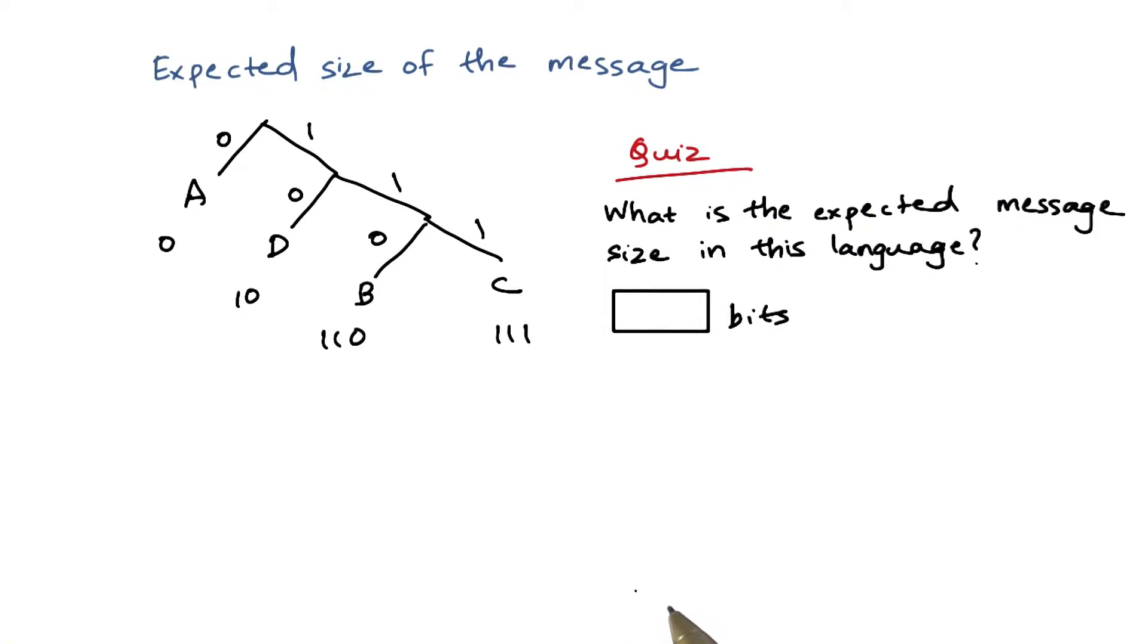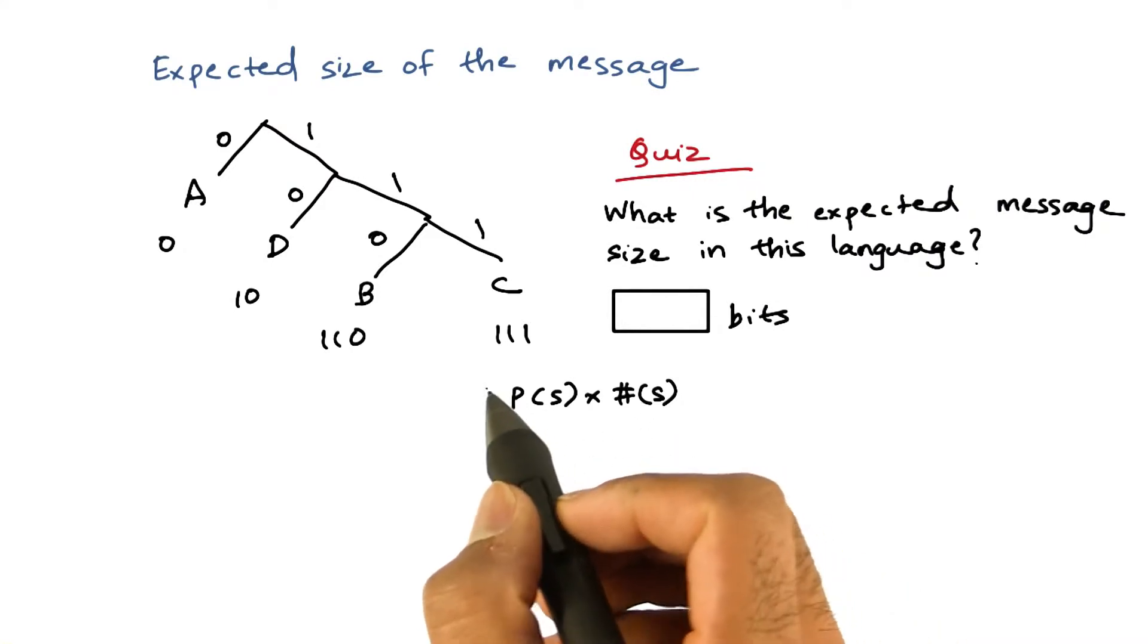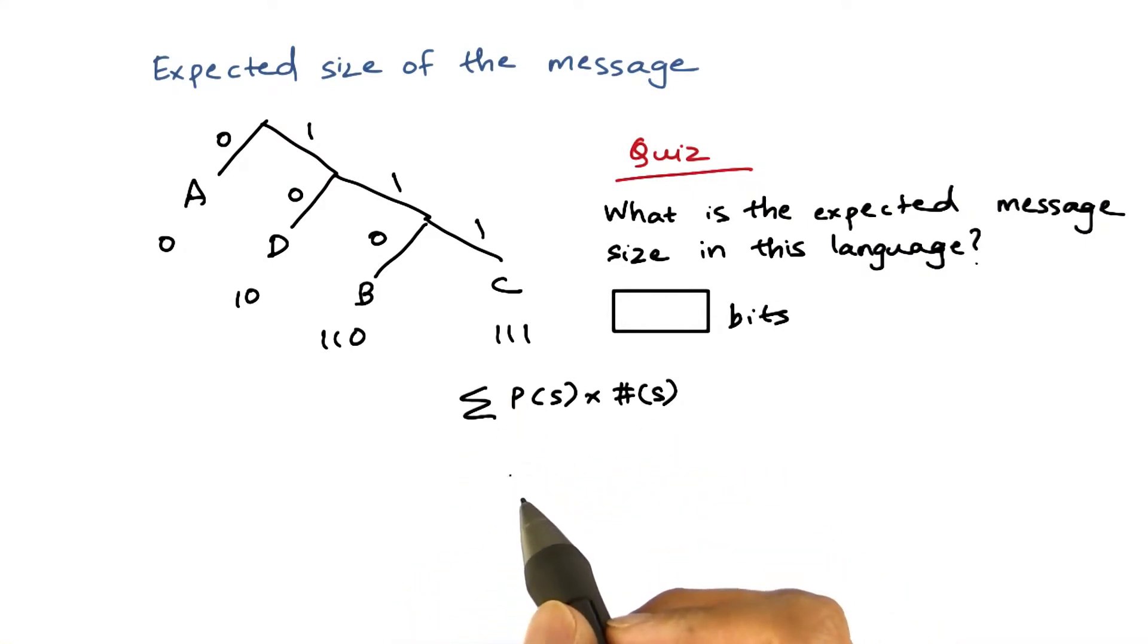So we will calculate the expected number of bits to transmit each symbol and then add them up. For any symbol, the expected number of bits is given by the probability of seeing that symbol times the size required to transmit that symbol. And we add them up for all the symbols in the language.